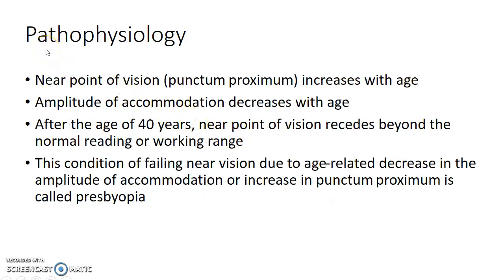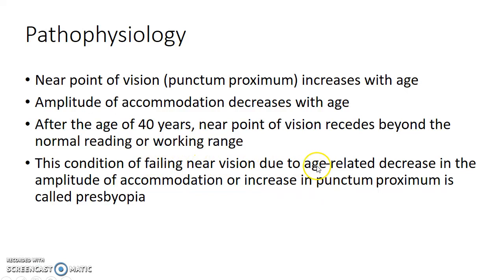Now let us see about the pathophysiology of presbyopia. The near point of vision, i.e. the punctum proximum, increases with age. Subsequently, the amplitude of accommodation decreases with age. After the age of 40 years, the near point of vision recedes beyond the normal reading or working range. This condition of failing near vision due to age-related decrease in the amplitude of accommodation or increase in punctum proximum is called presbyopia.